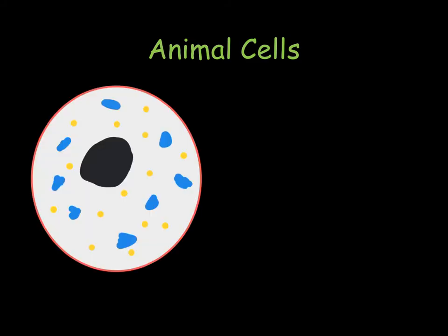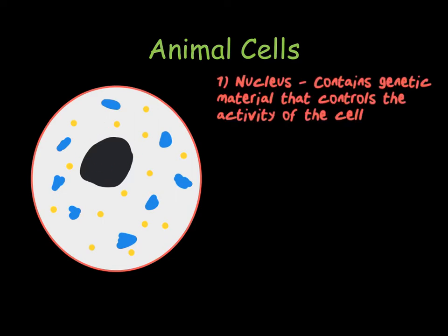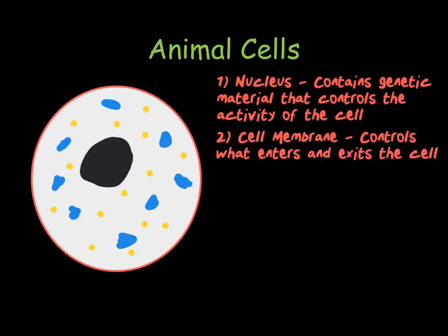First, we have animal cells. Within our animal cell, we have organelles. These are subcellular structures that are much smaller than the cell and are the component parts that make it up. In the middle of the cell, we have the nucleus. The nucleus contains all of the genetic information that controls the activities of the cell. The genetic material is arranged into chromosomes. On the outside of the cell, we have the cell membrane. This holds the cell together and controls what comes in and what goes out of the cell.